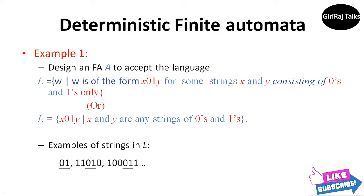So what do we know about an automaton that can accept this language L? First, its input alphabet is sigma equal to {0,1}. It has some set of states Q, of which q0 is the start state. This automaton has to remember the important facts about what inputs it has seen so far.